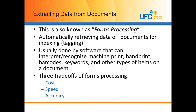Forms processing is when we extract or pull the data off the documents. That data is then used for indexing, or tagging, of the document. It's usually done by software that can interpret or recognize machine print, hand print, barcodes, keywords, and other types of items on a document. Before we dig in though, you should understand that there are three different tradeoffs to this process: the first is cost, the second is speed, and the third is accuracy.